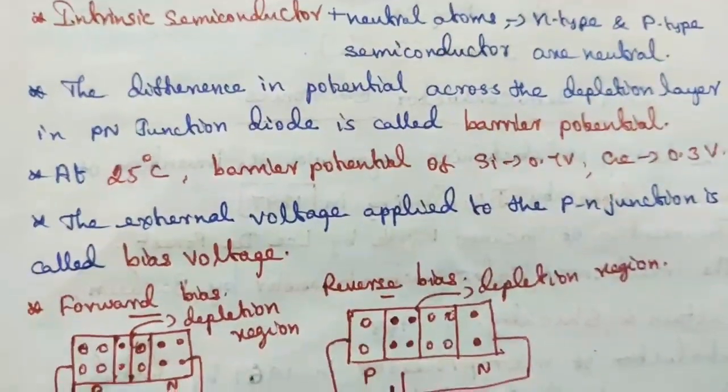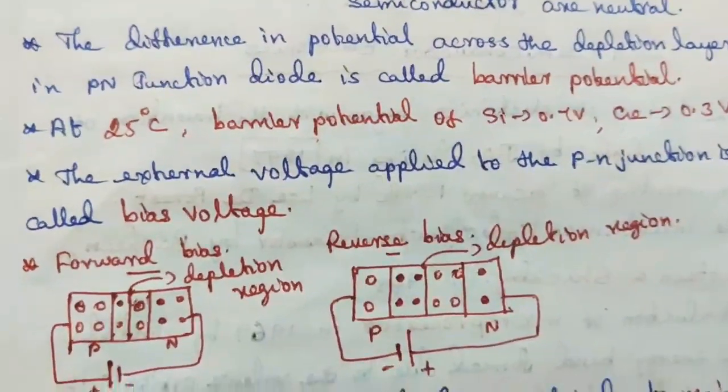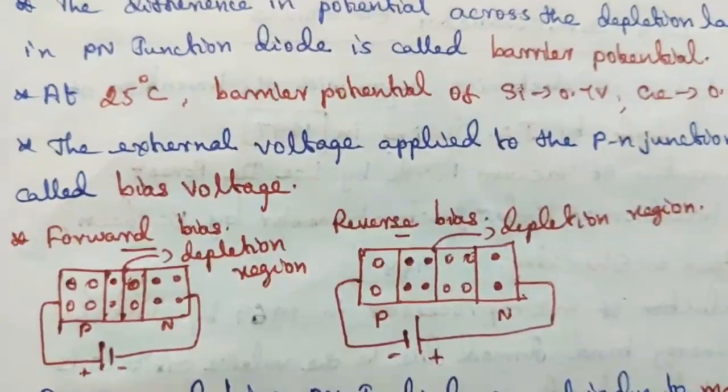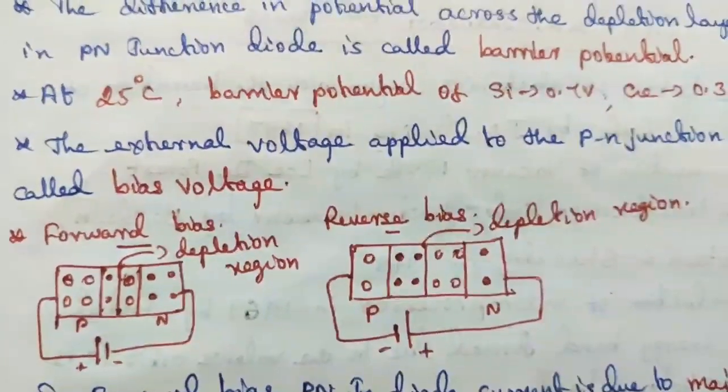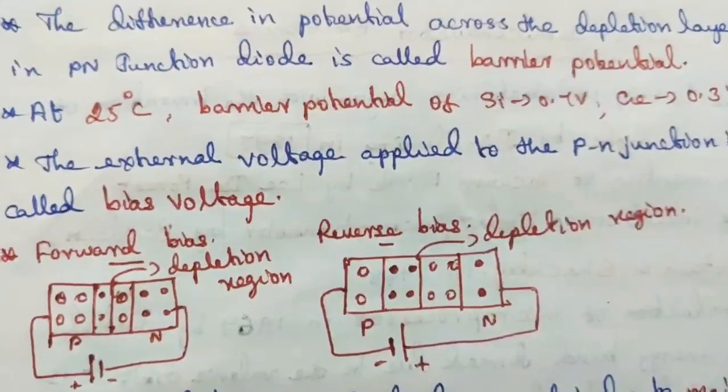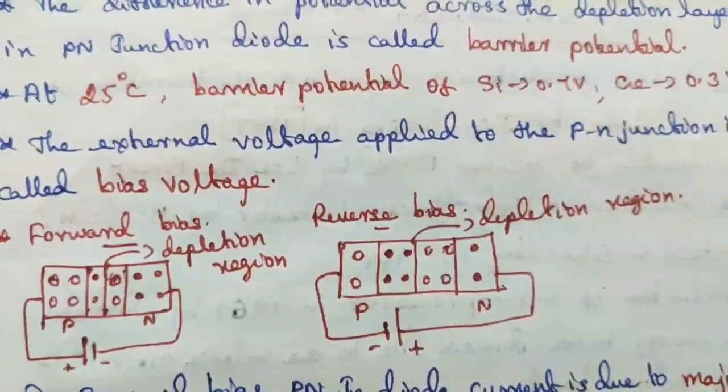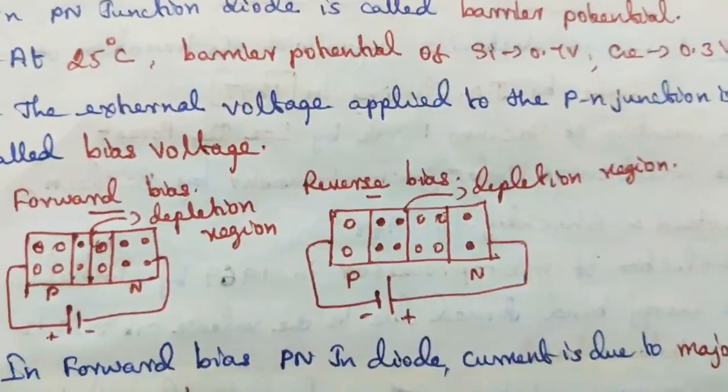In forward bias, the positive terminal of a battery is connected to p-region and negative is connected to n-region. In reverse bias, negative terminal of a battery is connected to p-region and positive to n-region.